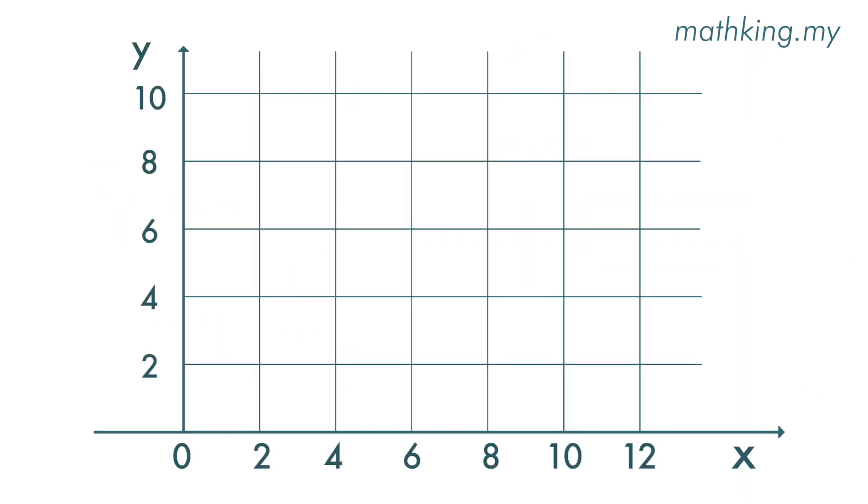Coordinate 0, 6 is here. While coordinate 12, 0 is here. When we have these two points, we can connect them with a straight line. And this line is 1 over 2 x plus y is equal to 6.